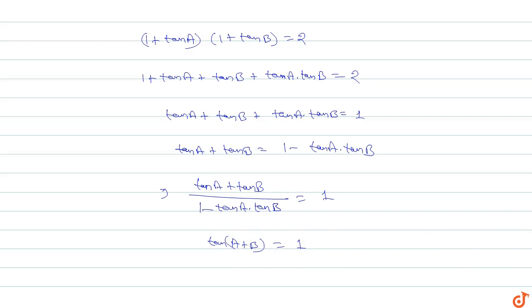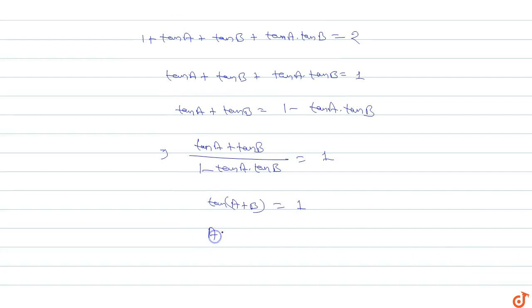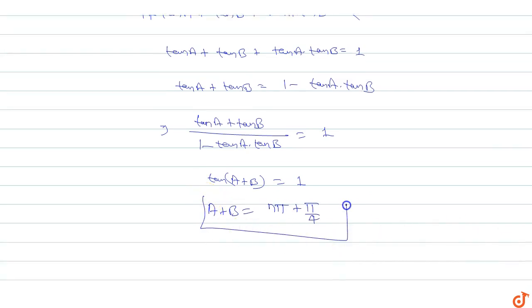So tan(a + b) equals 1. For the general solution, a + b equals nπ + π/4, since tan(π/4) = 1. So the general solution is a + b = nπ + π/4.